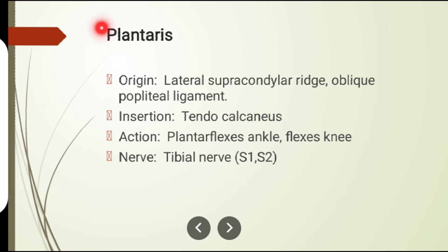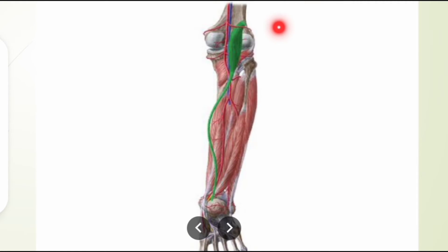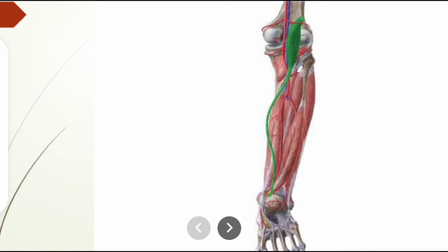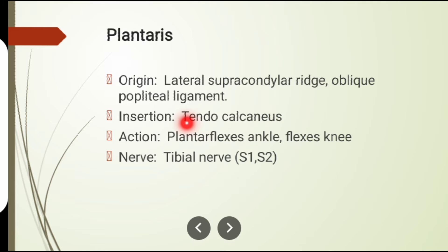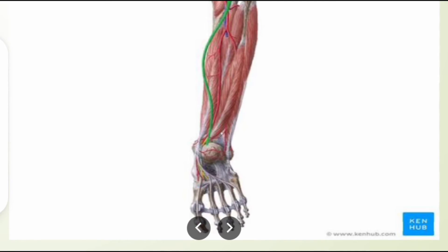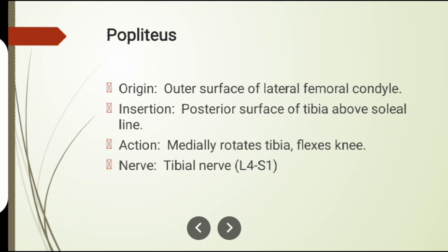Plantaris muscle is also a knee flexor. Its origin is from the lateral supracondylar ridge and the oblique popliteal ligament. Its insertion is on the calcaneus tendon. Actions: plantar flexion and knee flexion. Nerve supply: tibial nerve.